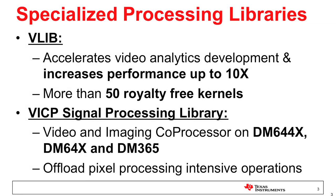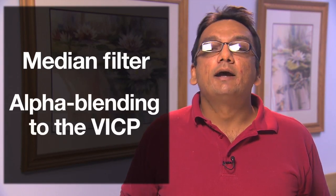The vICP is a video and imaging coprocessor available on DM6444X, DM644X, and DM365 devices. The vICP signal processing library enables faster development time by providing various ready-to-use functions for signal processing. By offloading pixel processing intensive operations such as image unpack, color space conversion, median filter, and alpha blending to the vICP, the DSP headroom can be significantly improved.